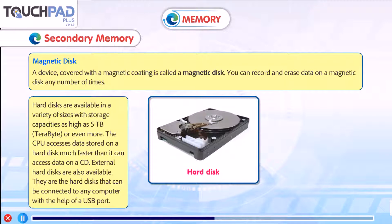Hard disks are available in a variety of sizes with storage capacity as high as 5TB (terabyte) or even more. The CPU accesses data stored on a hard disk much faster than it can access data on a CD.